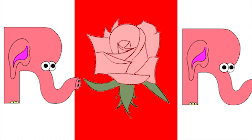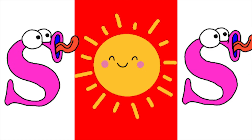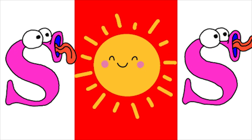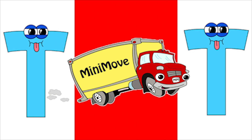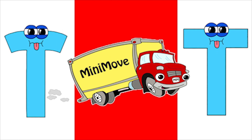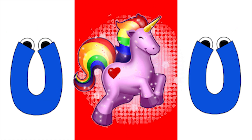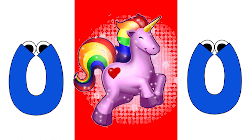R for rose, S for sun, D for tub, U for unicorn.